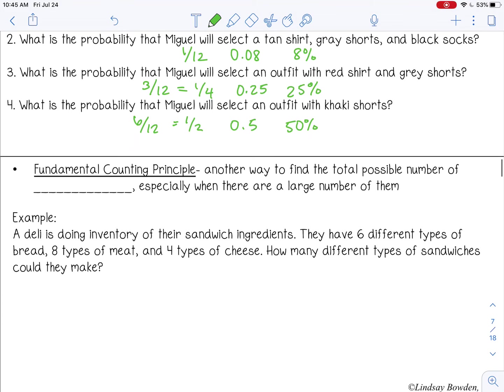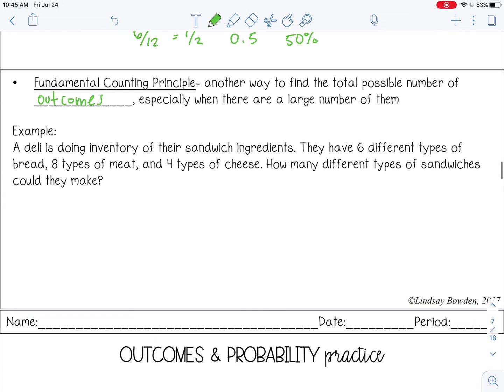Last thing in this lesson is called the fundamental counting principle. And this is another way to find the total possible number of outcomes, especially when there are a large number of them. So here is an example. A deli is doing inventory of their sandwich ingredients. They have 6 different types of bread, 8 types of meat, and 4 types of cheese. How many different types of sandwiches could they make? So a couple of things. We don't know the types of bread and the types of meat and the types of cheese. So we can't make a tree diagram. We just know that there are 6 different types. So the only thing we can do here is find the number of outcomes, but we can't find specific probabilities of specific types of bread, meat, or cheese.